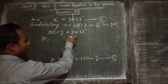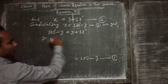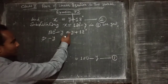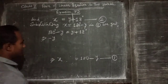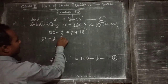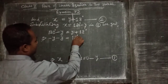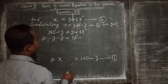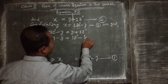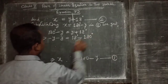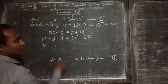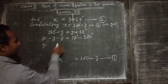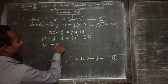We shift y to the left side and shift 180 to the right side. On the left side we have minus y, and shifting y from the right side gives another minus y. Both have a minus sign, so we add them to get minus 2y. On the right side, 18 has a plus sign and 180 is shifted to become minus 180, so we subtract to get 18 minus 180, which gives minus 162 degrees.